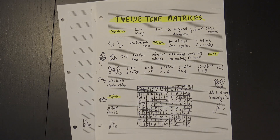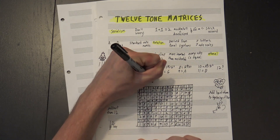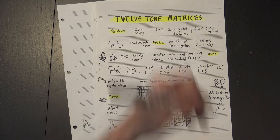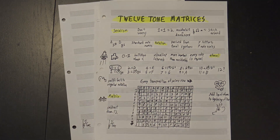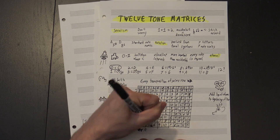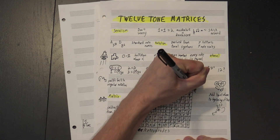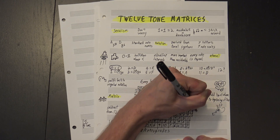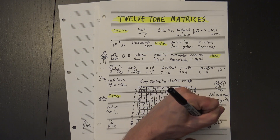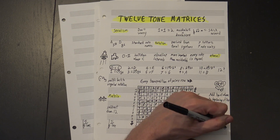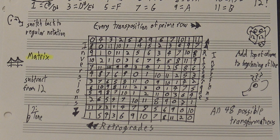So what's the point? Well, if you read across each of the lines, you have every possible transposition of your prime row. If you read down the columns, you have every inversion. Reading a line backwards gives you your retrogrades, and reading columns from bottom to top gives you the retrograde inversions. This grid shows you all 48 possible transformations of your starting row, making it a useful reference for quickly determining your available options.